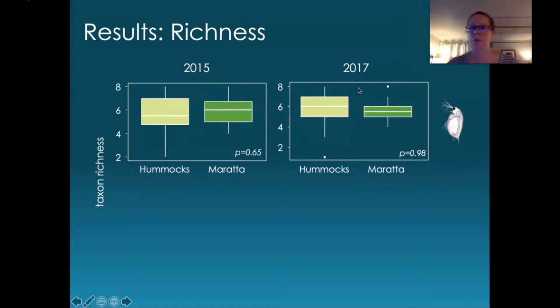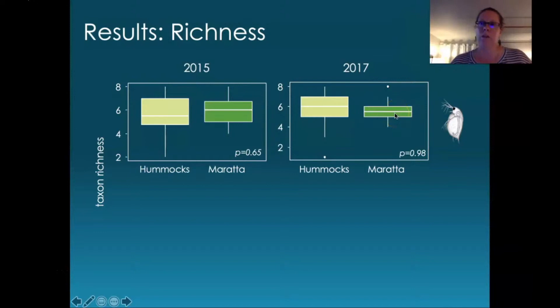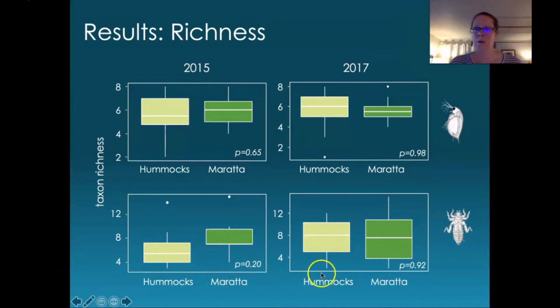Looking at species richness — first for zooplankton — we don't really see any differences between regions or over time. The 2015 and 2017 results were pretty similar and pretty depauperate. Looking at macroinvertebrates, again, no significant differences between the two regions nor big differences over time — also a very small number of taxa present in these ponds on average.